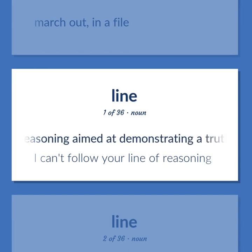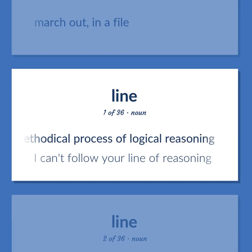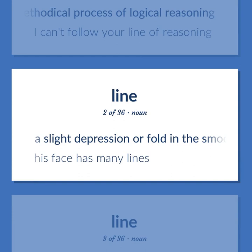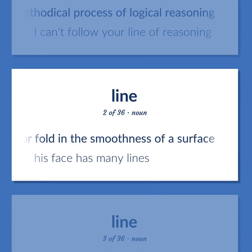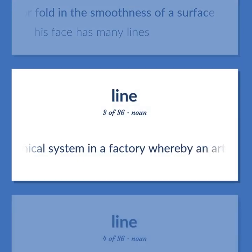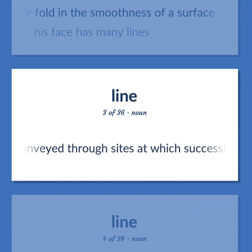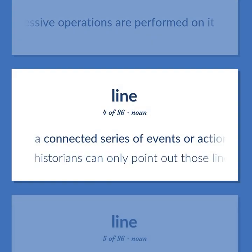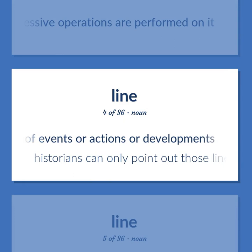Line: a course of reasoning aimed at demonstrating a truth or falsehood; the methodical process of logical reasoning. Example: I can't follow your line of reasoning. A slight depression or fold in the smoothness of a surface. Example: his face has many lines. Mechanical system in a factory whereby an article is conveyed through sites at which successive operations are performed on it. A connected series of events or actions or developments. Example: historians can only point out those lines for which evidence is available.